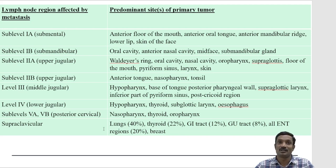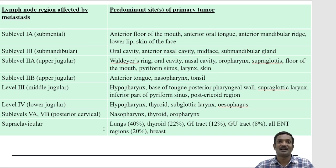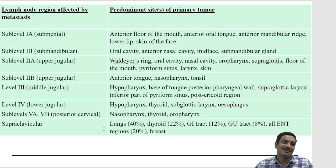Lymph node drainage follows the primary site. Midline lesions like lip cancer drain to level 1A. The tip of the tongue drains to 1A, the anterior floor of mouth to 1A, and the anterior arch of mandible to 1A. As you go laterally — lateral border of tongue, lateral alveolus, molar region, or buccal mucosa — nodes enlarge in levels 1B, 2, and 3. So when a specific lymph node level is enlarged, you suspect a primary in its corresponding drainage site.